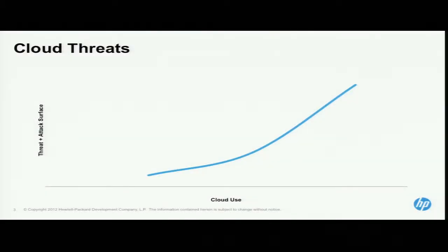Here's a graph that describes going from the left side where your private clouds are. As you move across to the right, the threat and attack surface of your cloud deployment increases. Somewhere in the middle you have clouds set up to do web-facing operations, clouds with interactions with different other clouds or interfaces. And then on the right you have public cloud, which is an interesting place to work right now.